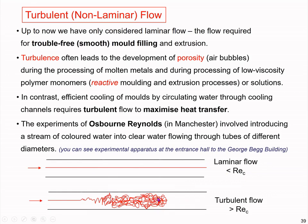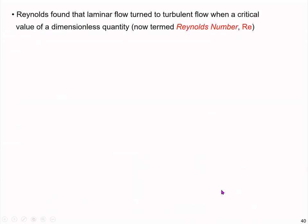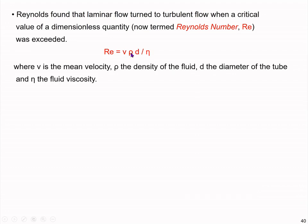One of his apparatus used for this experiment is available in the George Begg building. Laminar flow is quite smooth, while turbulent flow exhibits swirling mixing behavior. Reynolds found that laminar flow turns into turbulent flow when the Reynolds number exceeds a critical value. The Reynolds number is a dimensionless quantity equal to velocity times density times diameter divided by viscosity.